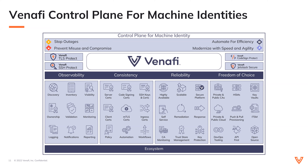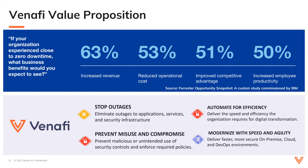That's where our ecosystem comes in. We have all sorts of providers — cloud-based and data center-based identity providers. At a technical level, Venify speaks different protocols, connects to your different enterprise applications, and your various identity providers and consumers. Venify's unique value proposition will, on average, increase revenue by 63% while reducing operational cost by 53% by focusing on four use cases: eliminating outages to applications, services, and security infrastructure; preventing malicious and unintended use of security controls; delivering the speed and efficiency organizations require for digital transformation; and delivering fast, more secure cloud and DevOps. All of that allows 51% improved competitive advantage and 50% increased employee productivity.